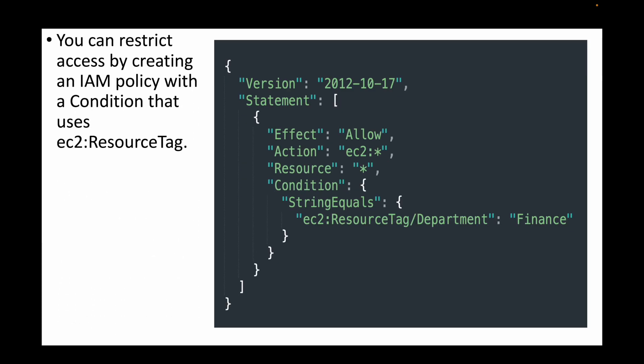The next question is: how do you restrict access based on specific tags on an EC2 instance? Again, we use conditions in the IAM policy. In this case we look at the resource tag — if the tag matches, we allow the actions; if not, we do not allow the action. Based on whether the conditions are satisfied, access is either granted or denied.